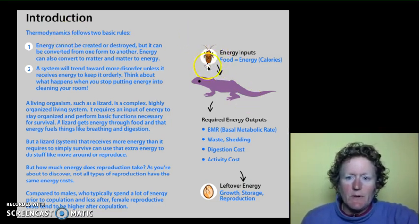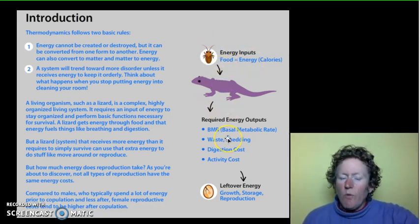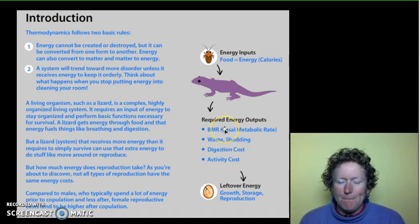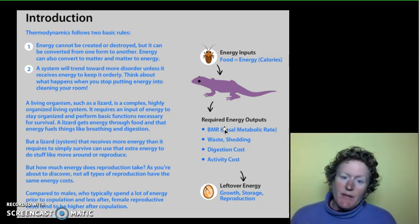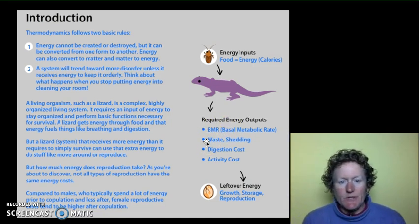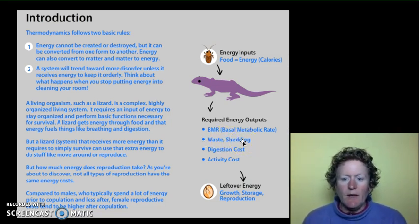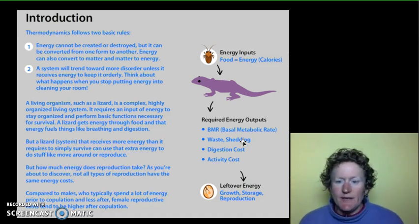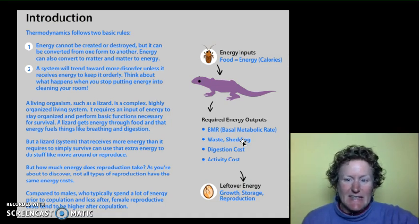The energy inputs we're going to look at are crickets — these lizards are going to eat crickets. They require energy for different things. We all require energy for staying alive: we need energy to breathe, for our heart to beat and our eyes to blink. That's called basal metabolic rate. We also need energy for producing waste, digestion, and for shedding. We shed our skin — we don't shed it all at once like a lizard or a snake, but we're always shedding skin cells. That's what most of the dust in your house is — about 90% is your skin cells.